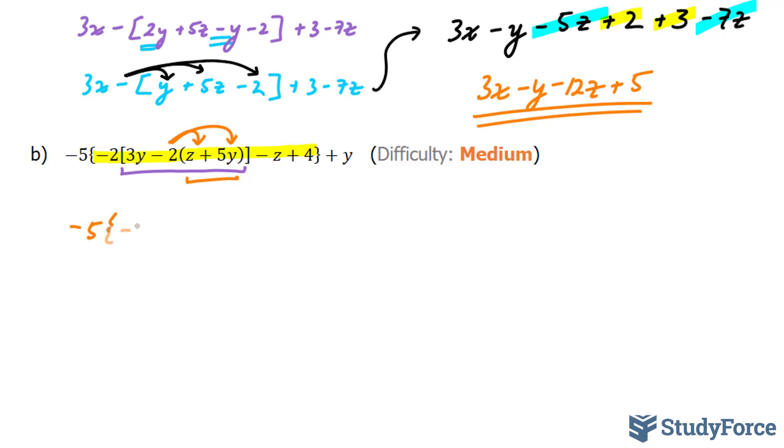If we do that, we end up with negative 5, negative 2, 3y minus 2z minus 10y. You need to be very careful while doing this because it's easy to make a mistake. Plus y.